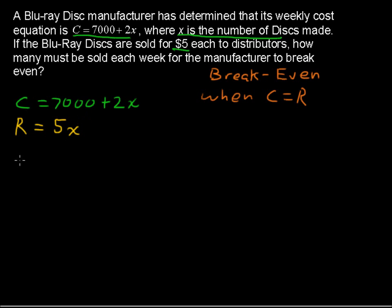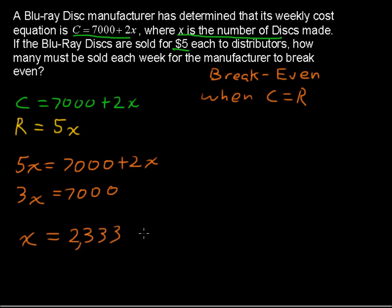So we can say that the revenue of 5x equals the cost of 7,000 plus 2x. Going ahead and solving that, subtracting 2x from each side, 3x equals 7,000 or x, the number of discs made, equals approximately 2,333 Blu-ray discs.